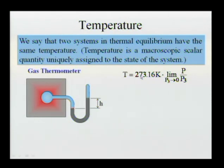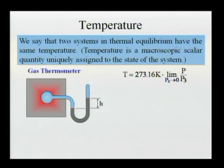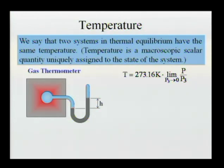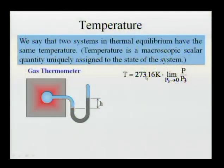This is how we assign a numerical value to temperature today. We have to take 273.16, which is the temperature assigned to the so-called triple point of water. Water at this temperature exists in equilibrium in all three phases simultaneously — gaseous, solid, and liquid. If we have a container of water in which we have simultaneously ice, vapor, and liquid water, and that system is stable, it has a temperature of 273.16 Kelvin.